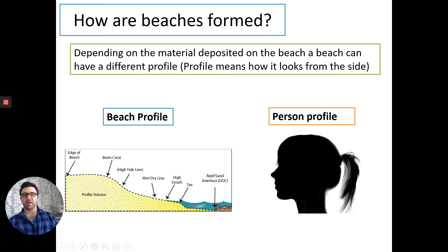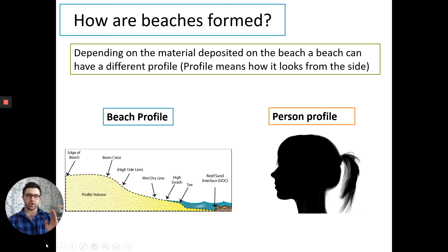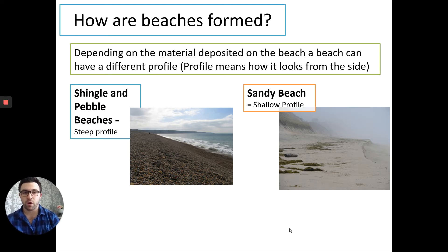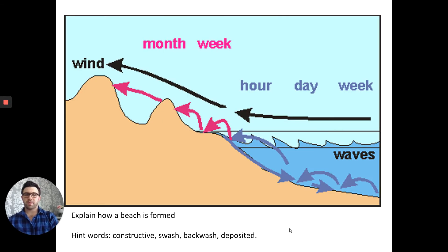For example, looking at the profile — imagining we're looking at it side on, with the sea on one side and the beach on the other — different material means the beach can have a different pebble or sandy profile, like Bournemouth beach.